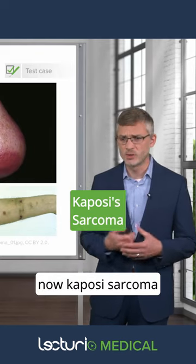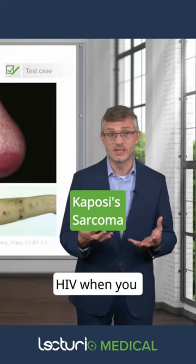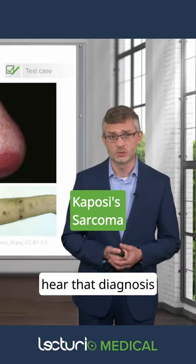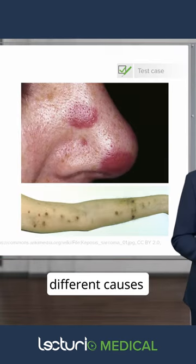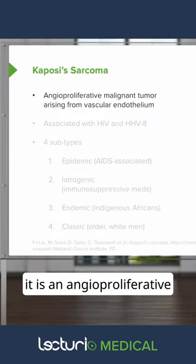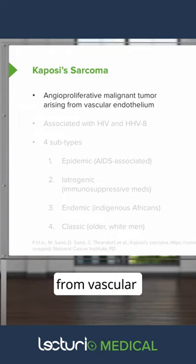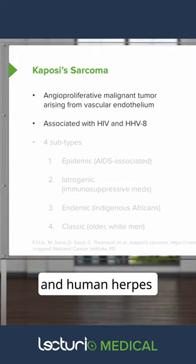Kaposi's sarcoma — you may automatically think about HIV when you hear that diagnosis. It is an angioproliferative malignant tumor arising from vascular endothelium. It is very commonly associated with HIV and human herpes virus 8.